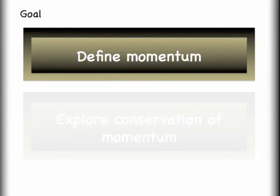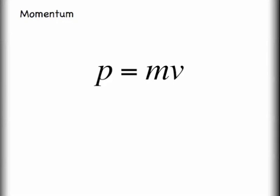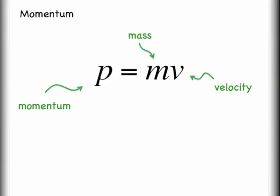But before we get to that, let's go ahead and get the idea of momentum out there. Momentum can be mathematically described with this fairly straightforward equation. The M represents mass, the V is for velocity, and the P is for momentum. You may be asking yourself, why is it that you would use P for momentum? That is a really good question.